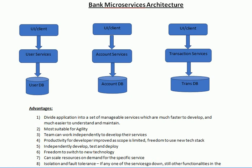For example, if we have user services, account services, and transaction services together providing the bank's microservices as one application — if account services has more demand or is used more by customers, we can provide more resources only for account services and keep resources minimum for user services and transaction services.